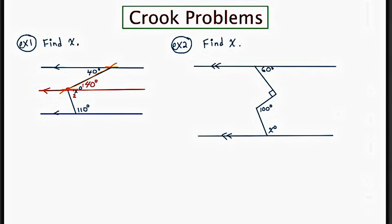Now focusing on the bottom portion: the angle marked 110 and the angle marked 2 — they both exist on the same side of the transversal, the right side, and they're both in the interior region. So they're same side interior angles. The theorem is that if the lines are parallel, then the same side interior angles are supplementary, and the supplement of 110 is 70.